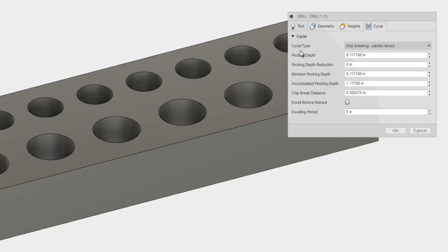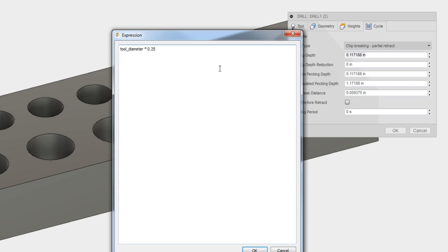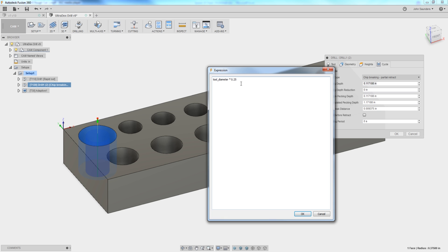Our Fusion 360 drilling cycle is set to chip breaking partial retract and that pecking depth looks like a funny number. If you right-click on it and say edit expression, you can see what Fusion is thinking here or doing. And what it's doing is it's taking a tool diameter times a quarter. So that's some sort of a standardized or factory recommended to peck a quarter of the diameter, which is fine for here. It's helping with chip breaking and making sure we get the chip evacuated.